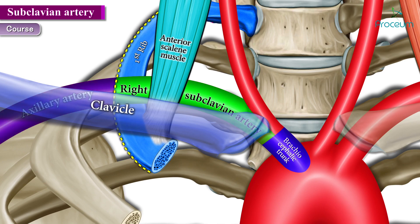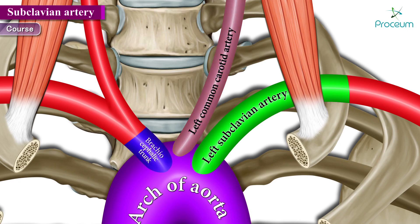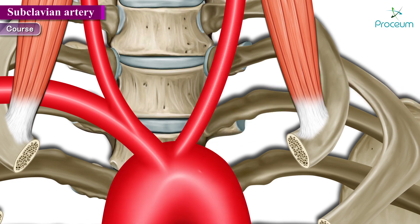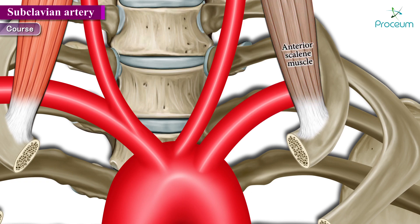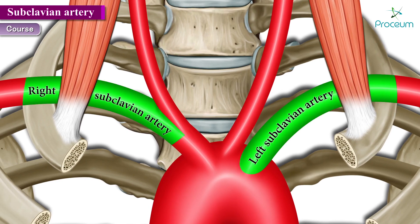Regarding the left subclavian artery: in the majority of individuals it originates independently from the aortic arch, after the brachiocephalic trunk and the left common carotid artery have branched off. It arises below the left common carotid artery, ascends into the neck lateral to the medial border of the scalenus anterior muscle, crosses behind this muscle, then descends to the lateral border of the first rib where it becomes the axillary artery.